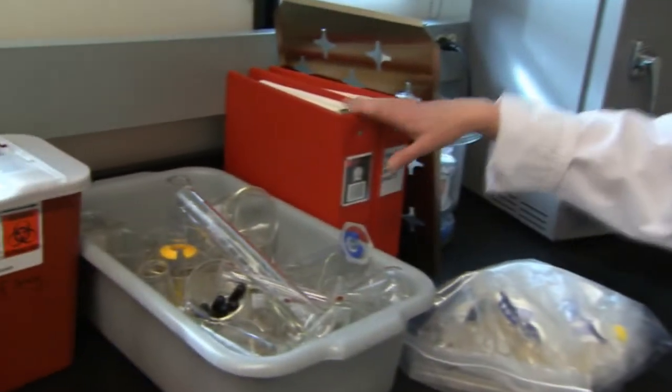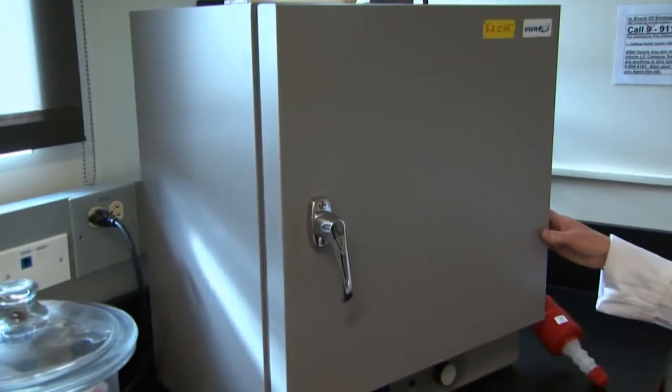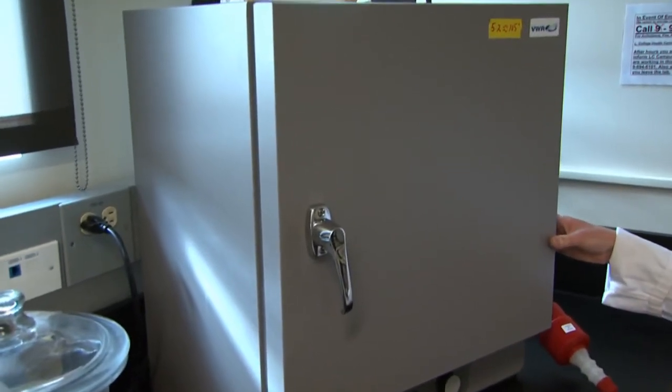MSDS sheets, an essential part of any chemistry lab so that students know and have reference to what it is they're working with. And finally over here, another oven that students can use for drying down samples or for preparing chemicals.